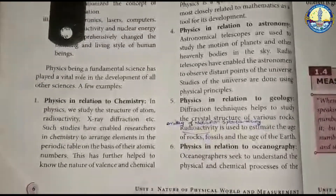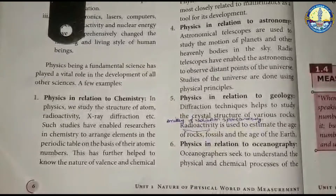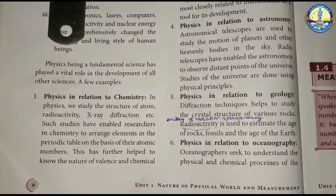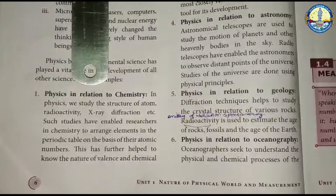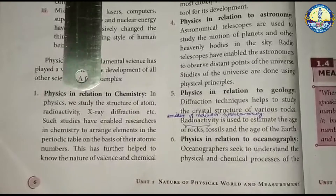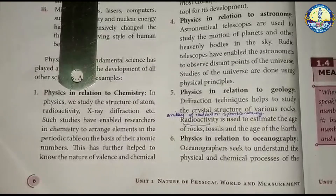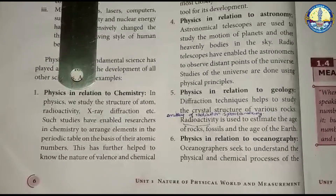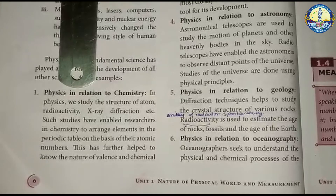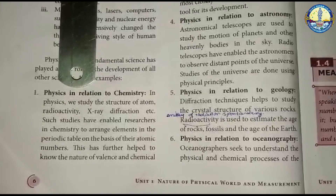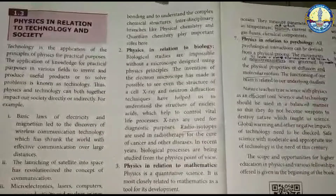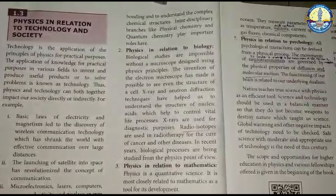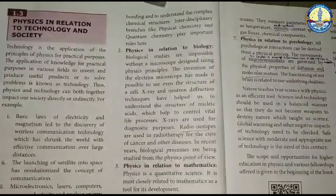Physics in relation to chemistry: in physics, we study the structure of atoms, radioactivity, and X-ray diffraction. This research has helped understand chemistry — including the nature of elements in the periodic table, chemical bonding, and complex chemical structures. Chemistry branches like physical chemistry and quantum chemistry are directly linked to physics.